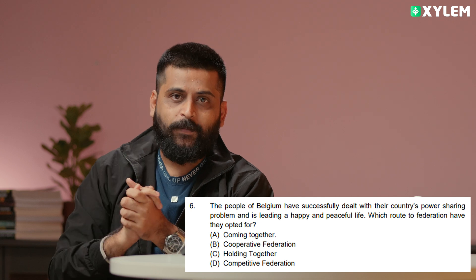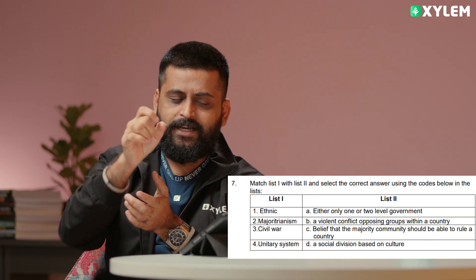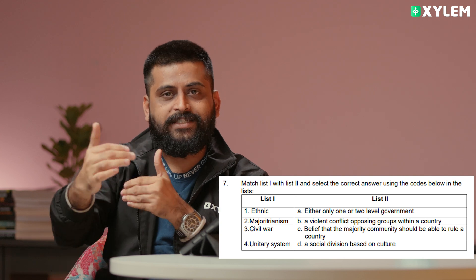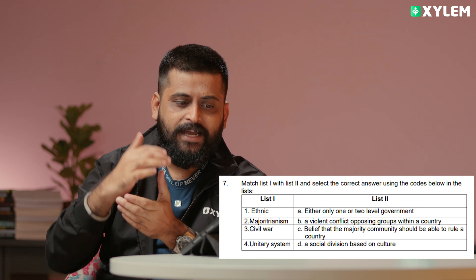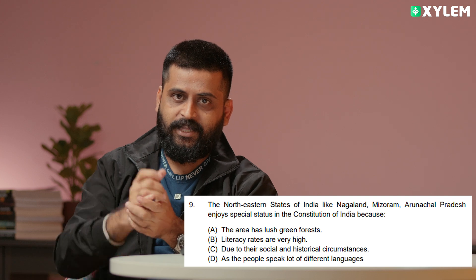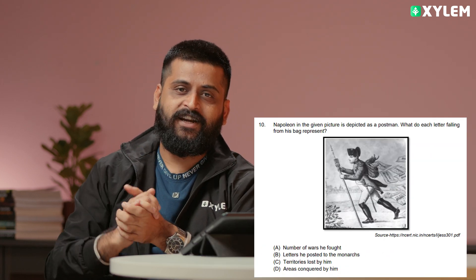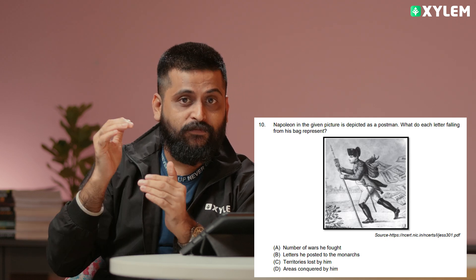Political Science is about federalism — we are going to answer the 6th question. The 7th question is about power sharing, and we are going to answer that. The 8th question is about federalism again. The 10th question is about picture-based questions. The first chapter is about the rise of nationalism in Europe.